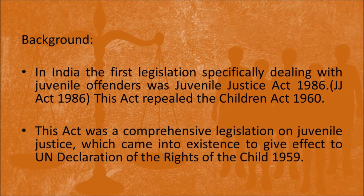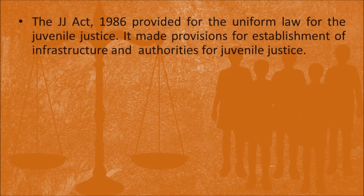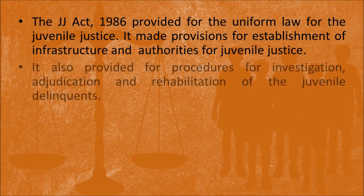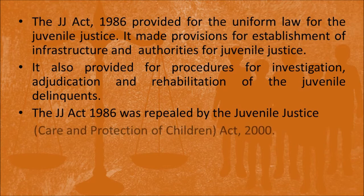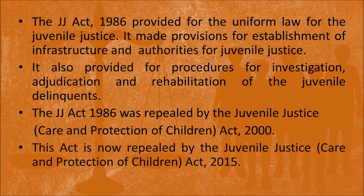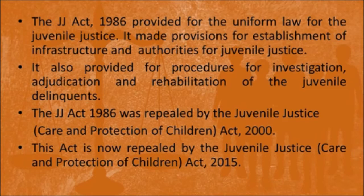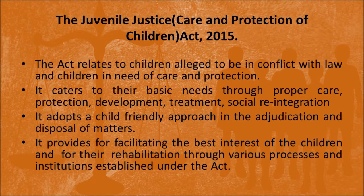The Juvenile Justice Act 1986 provided for a uniform law for juvenile justice. It made provisions for establishment of infrastructure and authorities for juvenile justice. It also made provisions for investigation, adjudication and rehabilitation of juvenile delinquents. But this act was repealed in 2000 and a new act came in its place: the Juvenile Justice (Care and Protection of Children) Act, 2000. This 2000 act was also subsequently repealed, and in its place we now have the Juvenile Justice (Care and Protection of Children) Act, 2015.